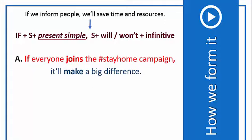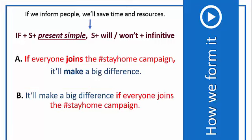Now let's have a look at the following sentences. Sentence A: if everyone joins the stay home campaign, it'll make a big difference. And sentence B: it'll make a big difference if everyone joins the stay home campaign. What's the difference between these two sentences? Yes, there's a comma in sentence A. So if the if part comes first, we separate it with a comma. When the if part comes in the second place, there's no comma used in the sentence.